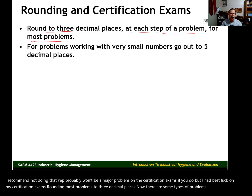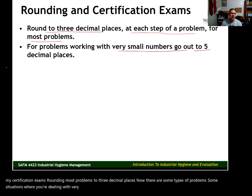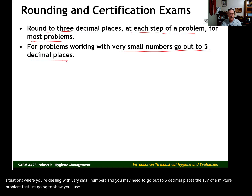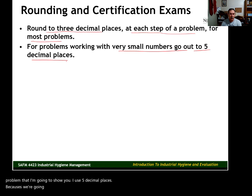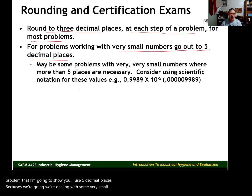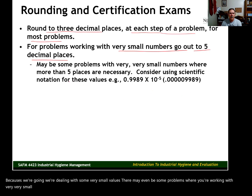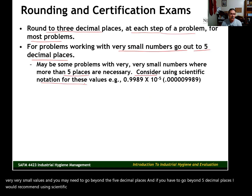There are some types of problems and situations where you're dealing with very small numbers, and you may need to go out to five decimal places. The TLV of a mixture problem that I'm going to show you, I use five decimal places because we're dealing with some very small values. There may even be some problems where you're working with very, very small values and may need to go beyond five decimal places.